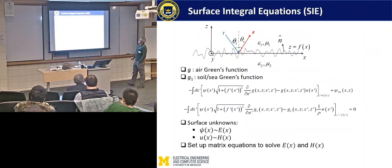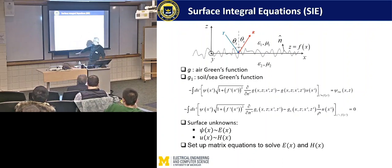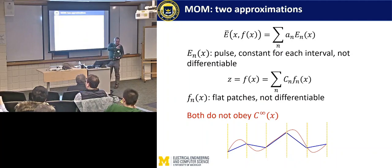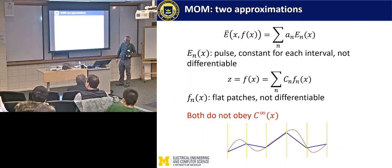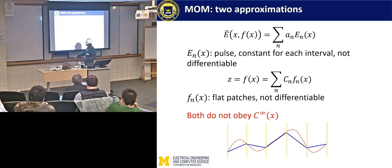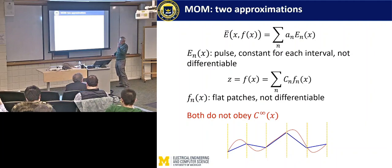What's the problem with the numerical method? You set up an integral equation and solve for the electric and magnetic fields on the surface using a matrix equation. The first approximation you make is writing the surface field as a summation of pulse functions — every interval is constant, so it's not differentiable. But Maxwell's equation says it's infinitely differentiable. And when you represent a rough surface, you replace it by flat patches — also not differentiable. So you make two approximations that go against Maxwell's equation. This is the classical problem of numerical noise and discretization errors.